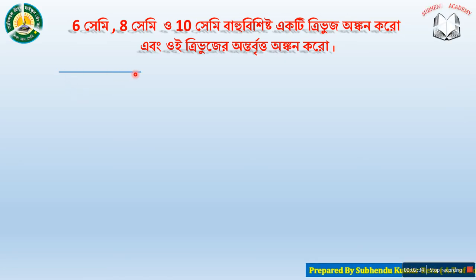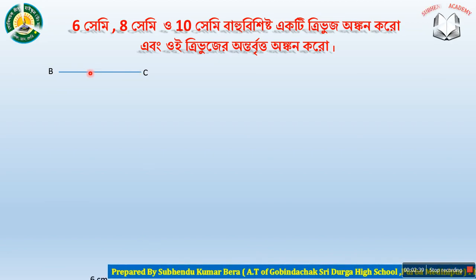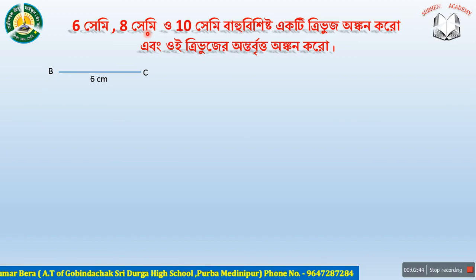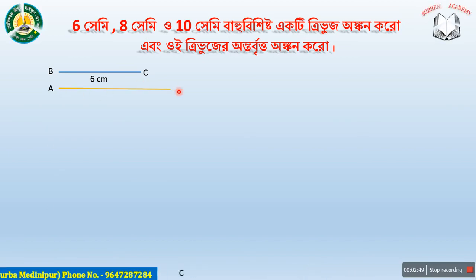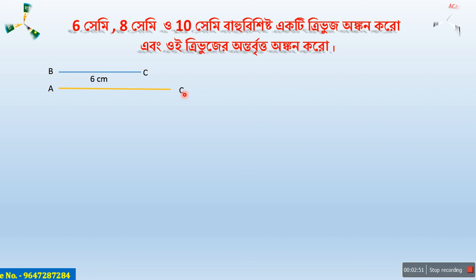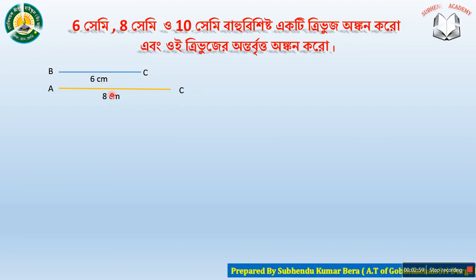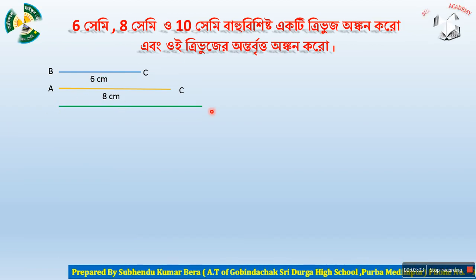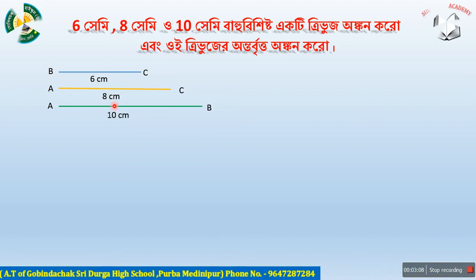প্রথম কাজ এটা ত্রিভুজ অঙ্কন করার পর ওই ত্রিভুজের অন্তবিত্তান করতে হবে। তেনে নাম দিলাম B, তেনে নাম দাও A. এটার নাম এটার নাম 20 cms. We see 10 cms. This is a b, this is 10 cms. This is a b.